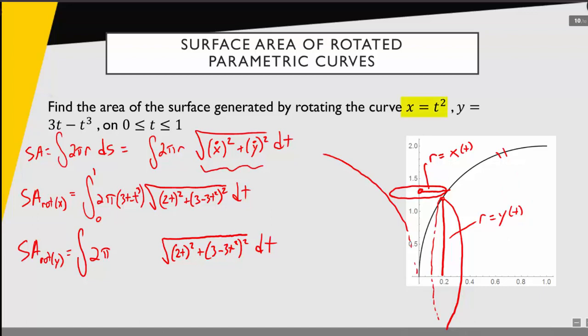But luckily, once again, I already have x as a function of t—it's just that parametric equation. So now my radius is going to be t squared. And once again, because I'm dealing with the same curve, I'm going to iterate over the same interval from 0 to 1. And so this should be our expression.